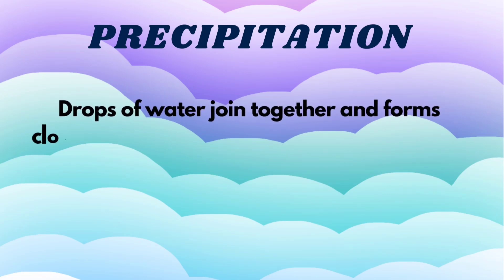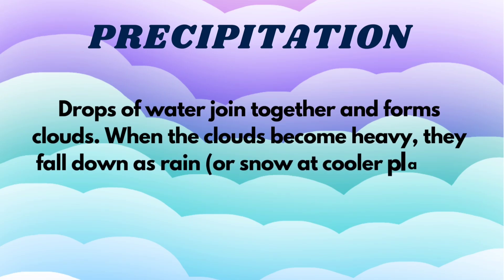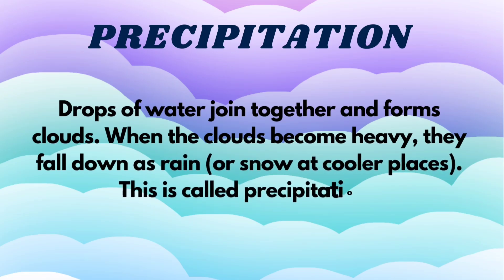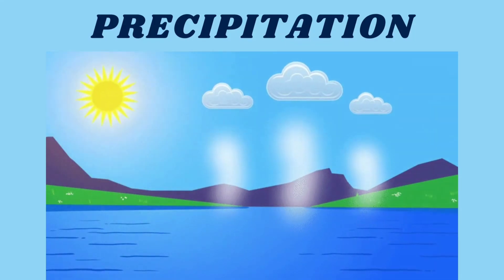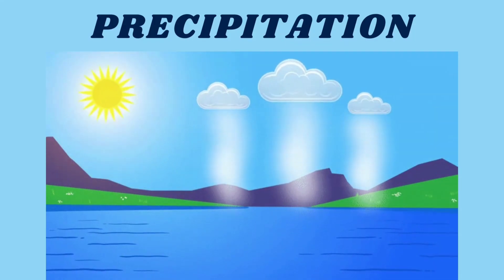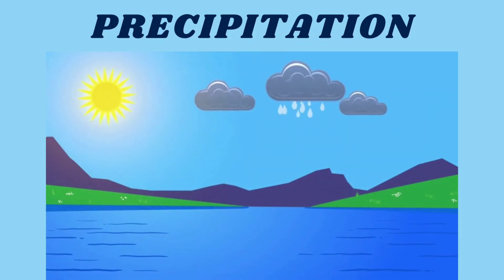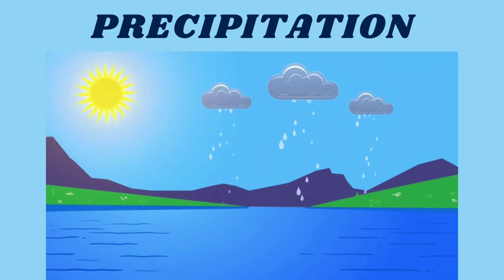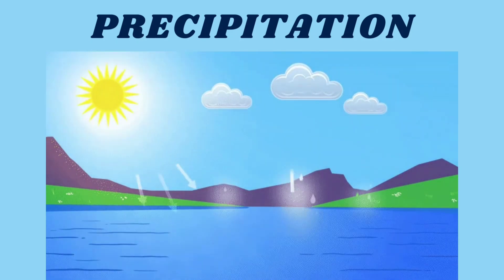Precipitation. Drops of water join together and form clouds. When the clouds become heavy, they fall down as rain or snow at cooler places. This is called precipitation. See the example of precipitation and see how this process happens.